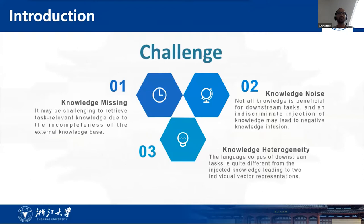There are several non-trivial challenges as follows. Knowledge missing: It may be challenging to retrieve task-relevant knowledge due to the incompleteness of the external knowledge base and thus provides no useful or even irrelevant information to downstream tasks. How to enrich task-relevant knowledge for tasks is an important issue. Knowledge noise: Previous studies have demonstrated that not all knowledge is beneficial for downstream tasks, and an indiscriminate injection of knowledge may lead to negative knowledge infusion, which is detrimental to the performance of downstream tasks. Thus, context-sensitive and task-specific knowledge selection is critical for knowledge-enhanced learning. Knowledge heterogeneity: The language corpus of downstream tasks is quite different from the injected knowledge, leading to two individual vector representations. How to design a special joint training objective to fuse knowledge information is another challenge.